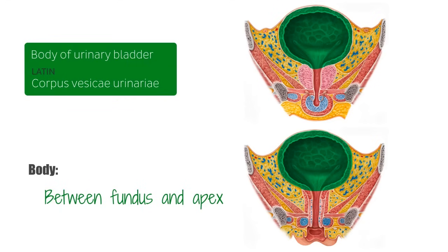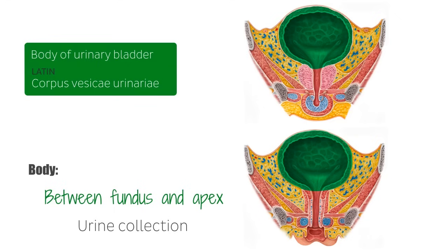This is a coronal section of the bladder, but if we imagine a sagittal section, the apex would be up front near the pubic symphysis and the fundus would be at the back. Urine from the kidneys via the ureters is collected in the body of the bladder, and as the bladder fills it takes an ovoid shape and extends towards the anterior abdominal wall within the greater pelvis.